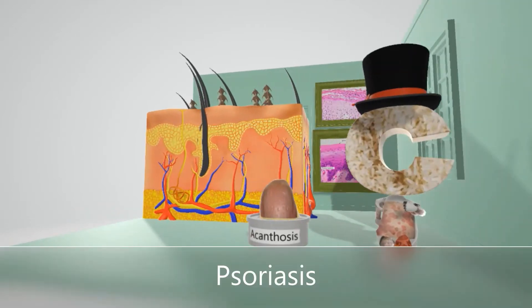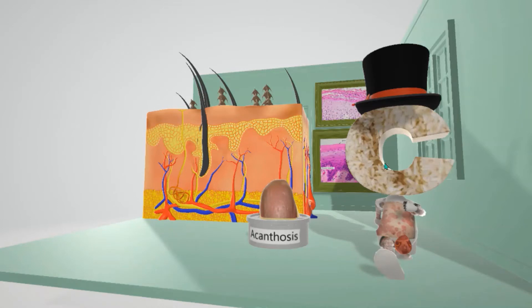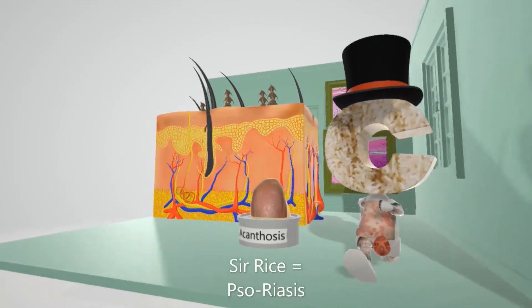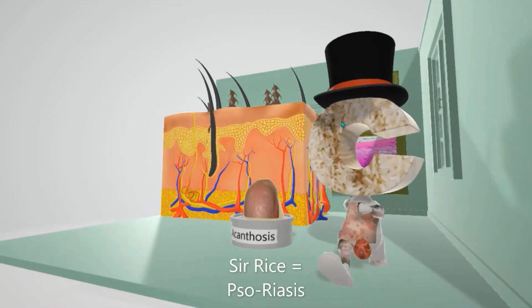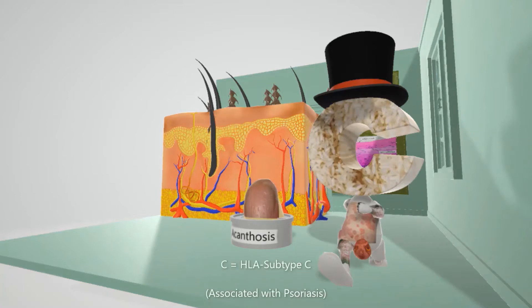This is our scene on psoriasis, represented by this guy who is Sir Rice. He is basically just rice — his whole head is just rice. Sir Rice for psoriasis. Why is it in the shape of a C? Because psoriasis is associated with HLA subtype C.